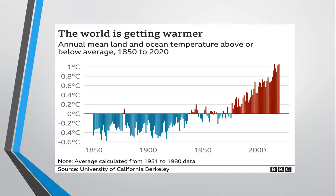As you can see, the world is getting warmer. From the 1850s — the pre-industrial revolution — to 2020, the temperature of the world has been increasing. Around 1900 to the 1950s there was a cooling effect of about minus 0.2 degrees Celsius, but after 2000 the temperature of the globe has been increasing beyond 1 degree Celsius per annum.